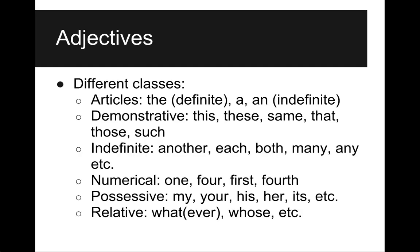Adjectives have different classes. They might be articles — 'the,' which is definite, or 'a' or 'an,' which is indefinite. Demonstrative, such as this, these, same, that, those, such. Indefinite, like another, each, both — doesn't refer to a specific thing.